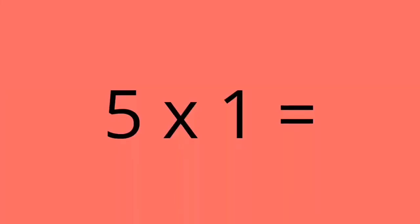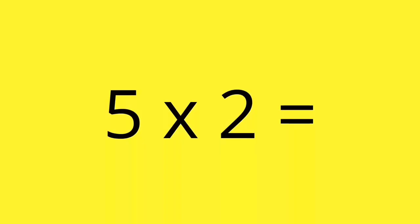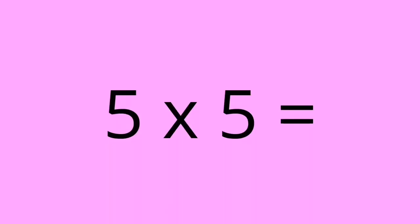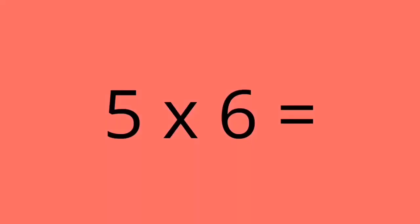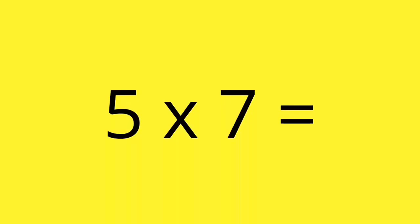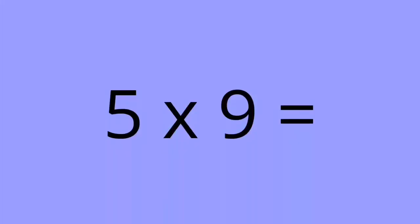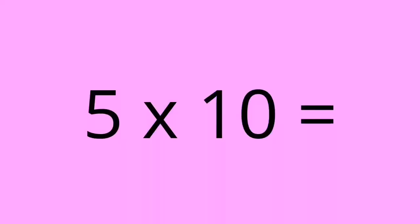Five times one equals five. Five times two equals ten. Five times three equals fifteen. Five times four equals twenty. Five times five equals twenty-five. 5 times 6 equals 30. 5 times 7 equals 35. 5 times 8 equals 40. 5 times 9 equals 45. 5 times 10 equals 50.